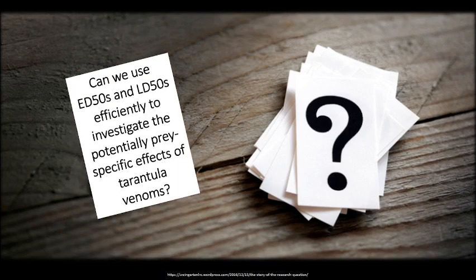Here, I use ED50s and LD50s to determine the efficacy or efficiency of a series of tarantula venoms. Can we use LD50s and ED50s efficiently to investigate the potentially prey-specific effects of tarantula venoms? Or in other words, can we use ED50s and LD50s to determine if tarantulas have evolved toxins that specifically target their natural prey, or do they produce a more universal venom, causing generalised effects in most or all prey types?